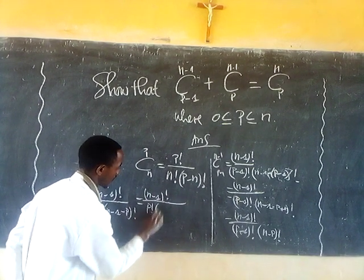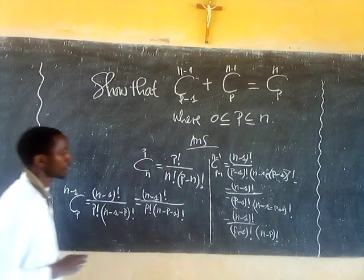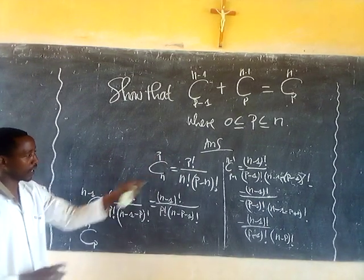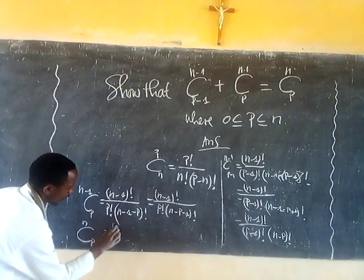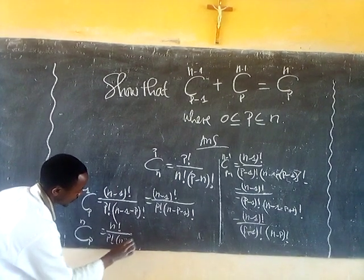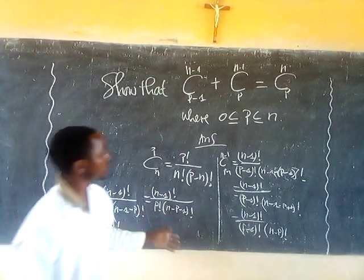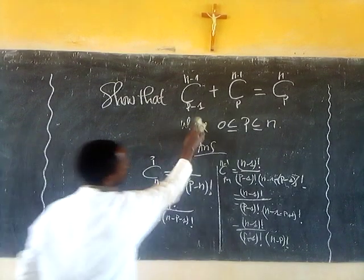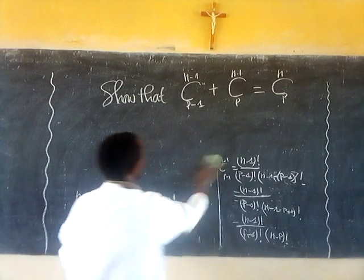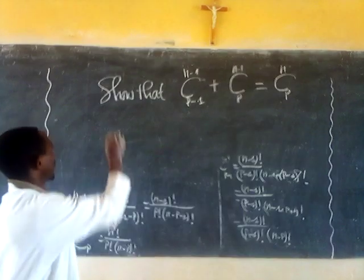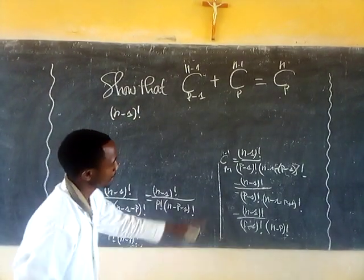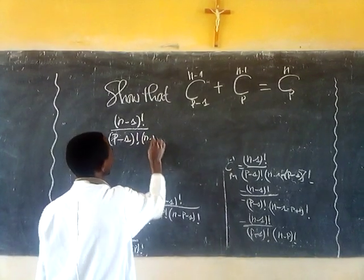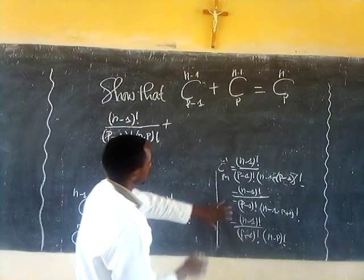Also, C(N-1, P) is equal to (N-1) factorial divided by P factorial times (N-1-P) factorial. So we need to replace the values of both terms and check if their sum equals C(N, P). When we replace, we get (N-1) factorial divided by (P-1) factorial times (N-P) factorial, plus (N-1) factorial divided by P factorial times (N-P-1) factorial.